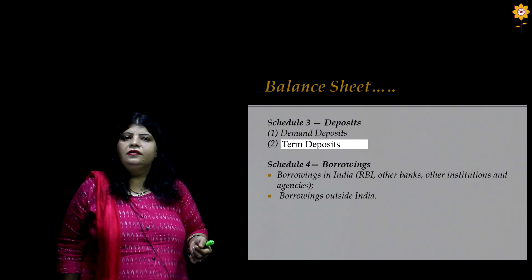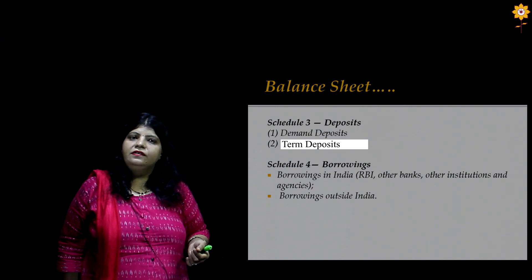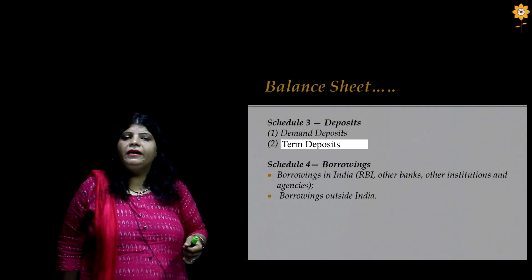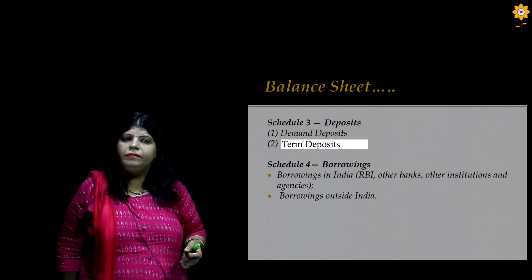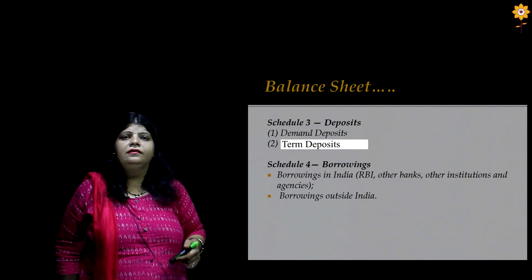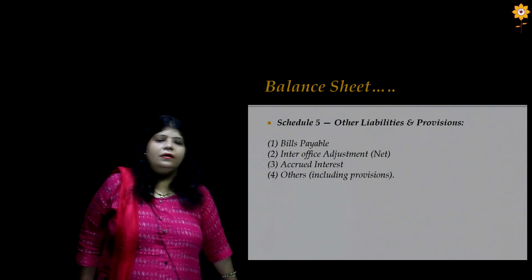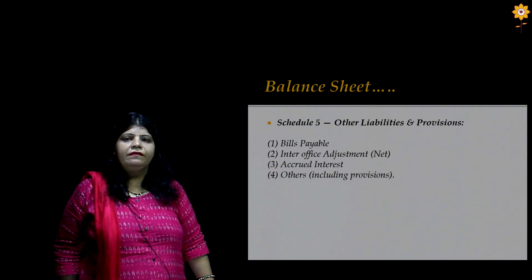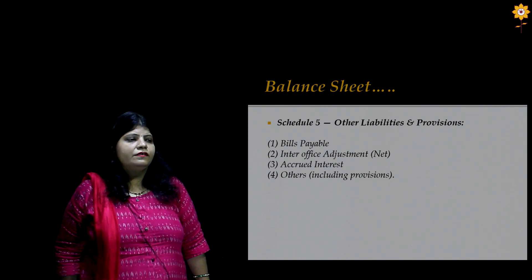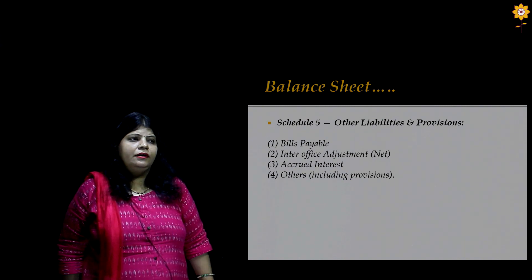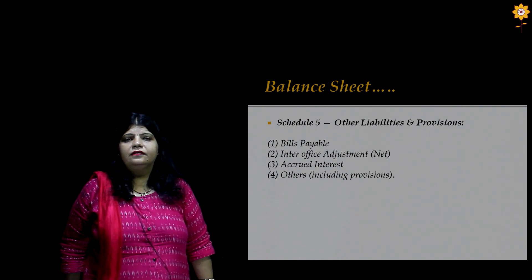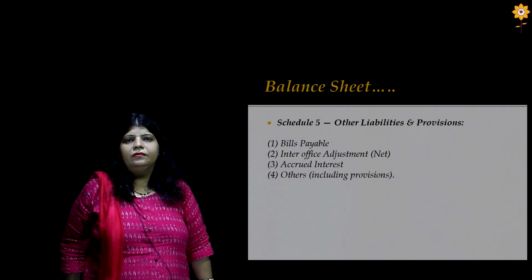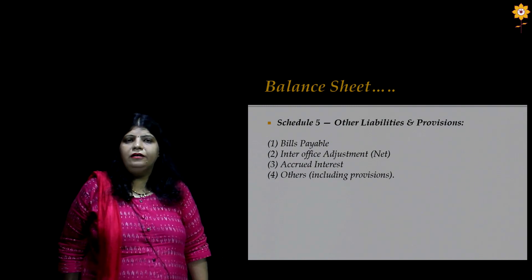Schedule 4 covers borrowings — borrowings in India and borrowings outside India. Primarily, a bank can borrow from RBI, other banks, and other institutions and agencies. Schedule 5 covers other liabilities and provisions, which includes items like bills payable, inter-office adjustment net, accrued interest, and others. Inter-office adjustment net is one of the crucial items of Schedule 5.